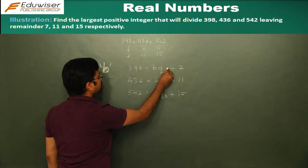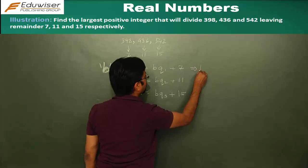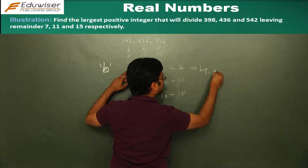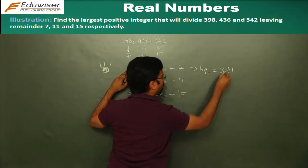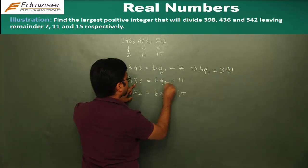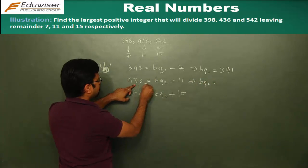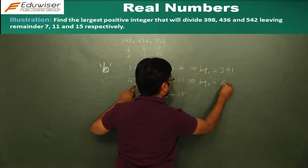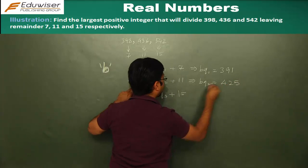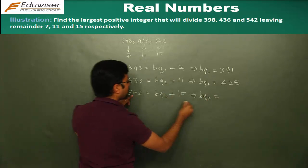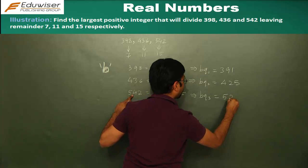Now from this equation, what do you get? BQ1 will become, you take 7 to the other side, it becomes 391. Here you take BQ2 will be 436 minus 11, that's 425. And here you have BQ3 and this would be equal to 542 minus 15, that's 527.